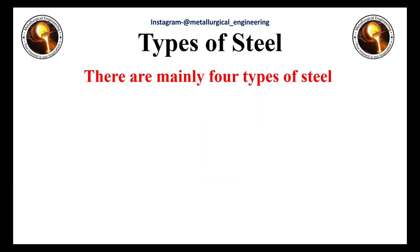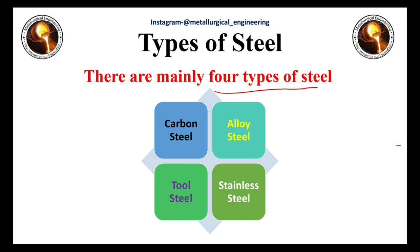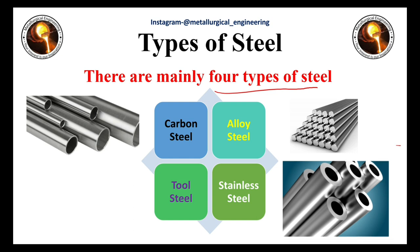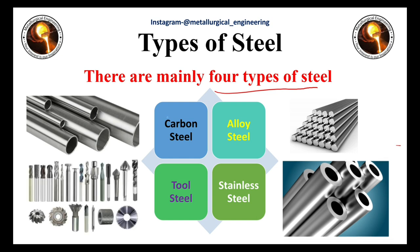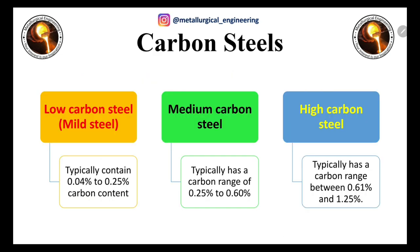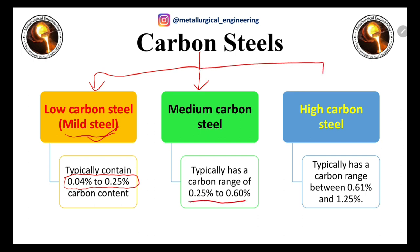Now the main topic: the types of steel. There are four types — carbon steel, alloy steel, stainless steel, and tool steel. Carbon steels are categorized into three types: low carbon steel (also known as mild steel), with 0.04–0.25% carbon; medium carbon steel, with 0.25–0.60% carbon; and high carbon steel, with 0.61–1.25% carbon.